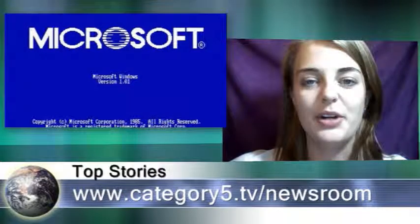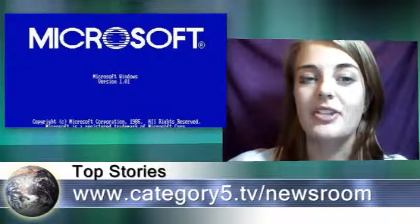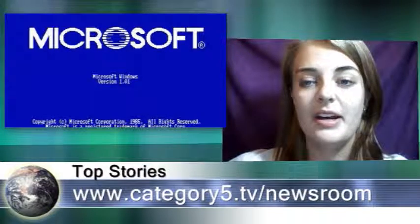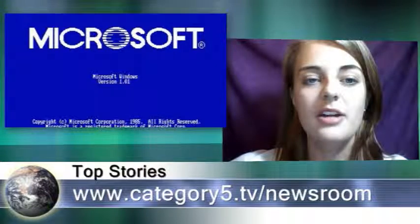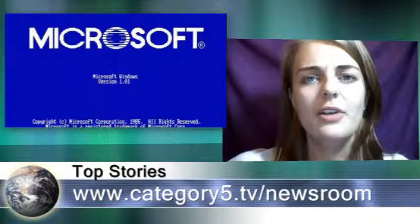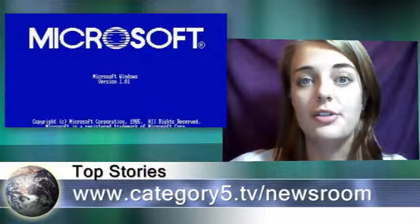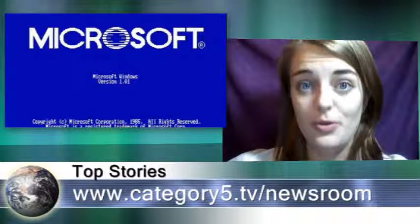Microsoft Windows celebrated 25 years on Saturday. On November 20th, 1985, Windows 1.0 was released, birthing an empire and introducing GUI-based computing and rudimentary multitasking to MS-DOS users. Since then, Microsoft has released 33 major versions of Windows. Four known versions were cancelled, including Windows Neptune, which was merged with Windows Odyssey and developed into Windows XP. Looking back, Windows didn't really take off until Windows 3.0 was released in 1990 — five years after the first release. What was the first version of Windows you used? Get the full stories at category5.tv/newsroom.